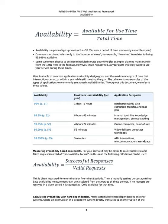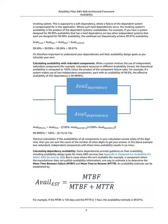Calculating availability with hard dependencies: Many systems have hard dependencies on other systems, where an interruption in a dependent system directly translates to an interruption of the invoking system. This is opposed to a soft dependency, where a failure of the dependent system is compensated for in the application. Where such hard dependencies occur, the invoking system's availability is the product of the dependent systems' availabilities. For example, if you have a system designed for 99.99% availability that has a hard dependency on two other independent systems each designed for 99.99% availability, the workload can theoretically achieve 99.97% availability.